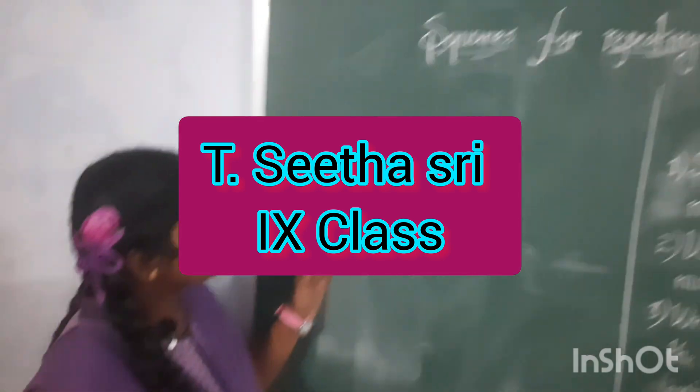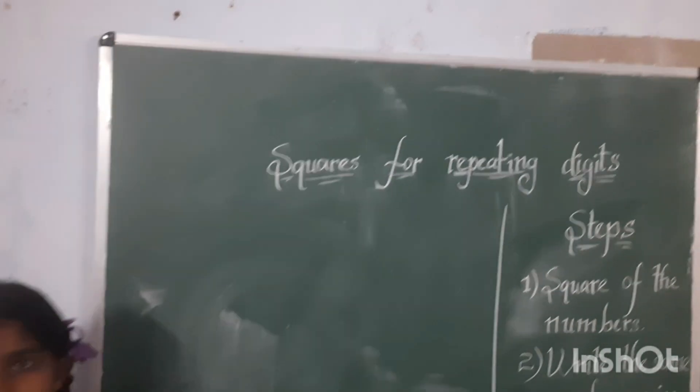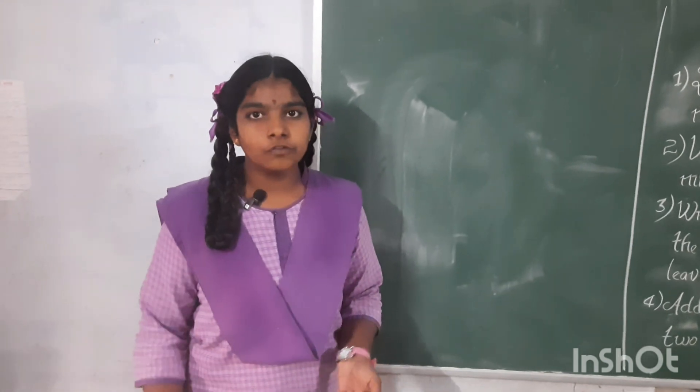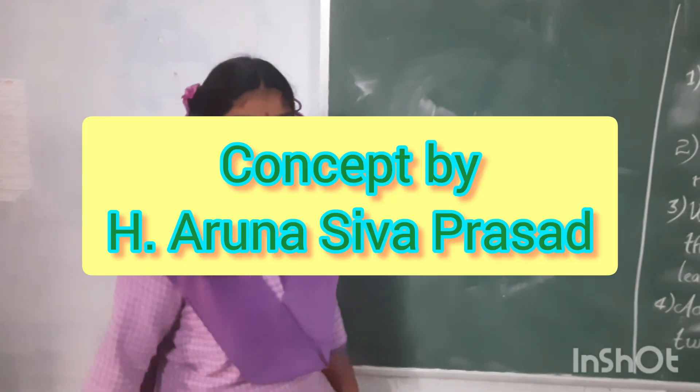Today I am going to tell about squares for repeating digits. What are the repeating digits? The repeating digits are 22, 33, 44 and so on. So let's see first example.